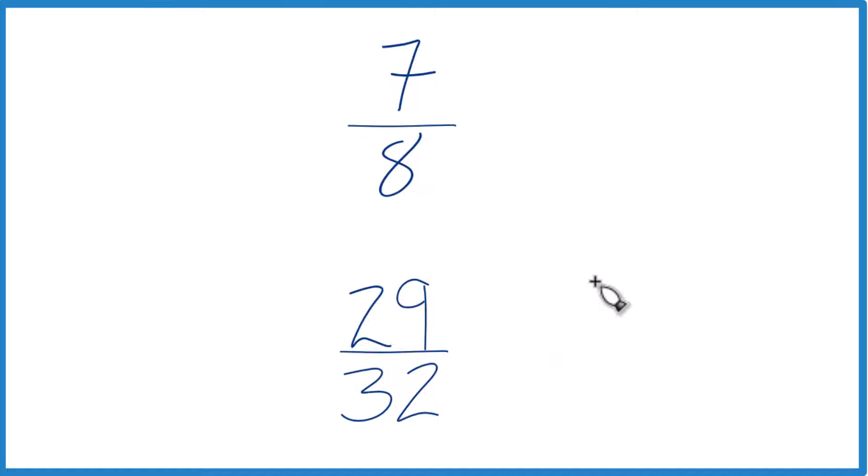You could also find a common denominator. Right now we have 8 and 32. But if we had the same denominator, we just compare the numerators and we'd be done.